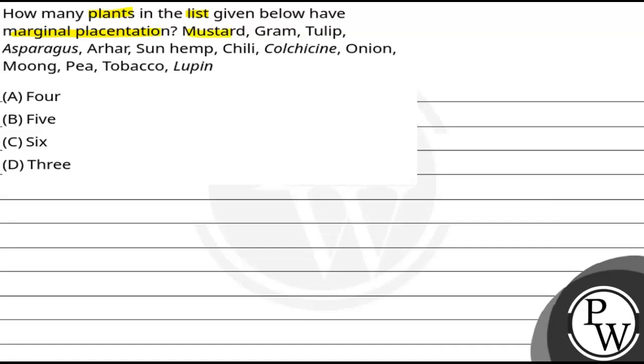They are mustard, gram, tulip, asparagus, arhar, sunhemp, chili, colchicine, onion, moong, pea, tobacco, and lupin. These names are given in the plant list.